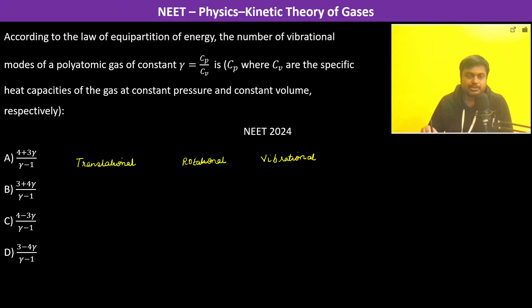Translational kinetic energy we have 3 by 2 R into T, this is the translational kinetic energy. Rotational, now since it is polyatomic, this is 3 by 2 R into T.